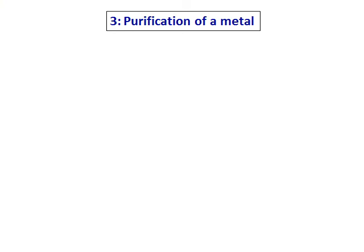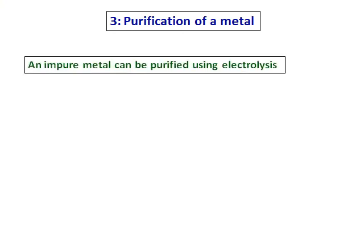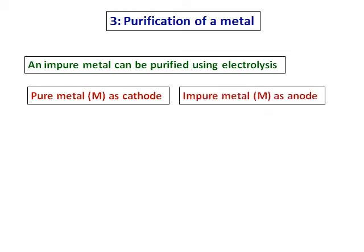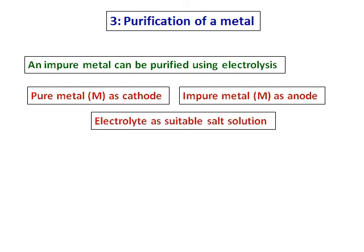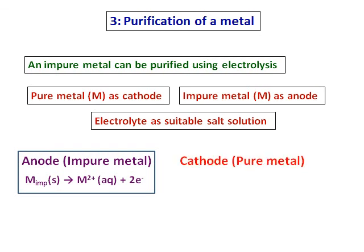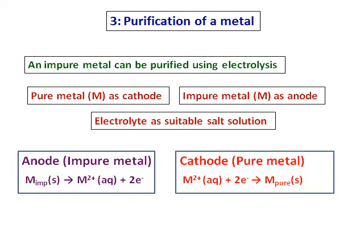Electrolysis is also applied for the purification of a metal — an impure metal gets purified using electrolysis. We take pure metal M as the cathode and impure metal M as the anode, with a suitable salt solution as the electrolyte. When current is passed, the impure metal at the anode gets oxidized and converts into ions. These ions move towards the cathode, get reduced to metal, and add on to the already present cathode, giving us pure metal at the cathode.